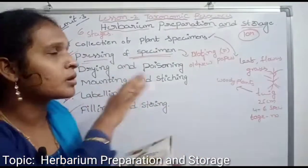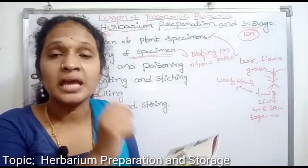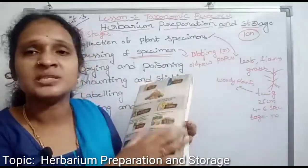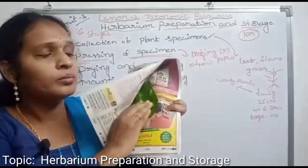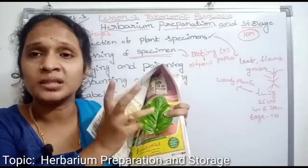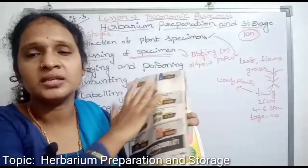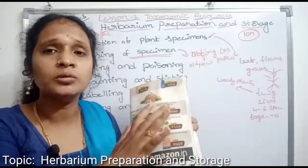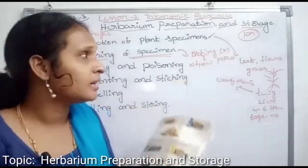In each sheet, we use newspapers and blotting papers. The plant specimens are arranged so that body parts like leaves and flowers do not overlap each other.